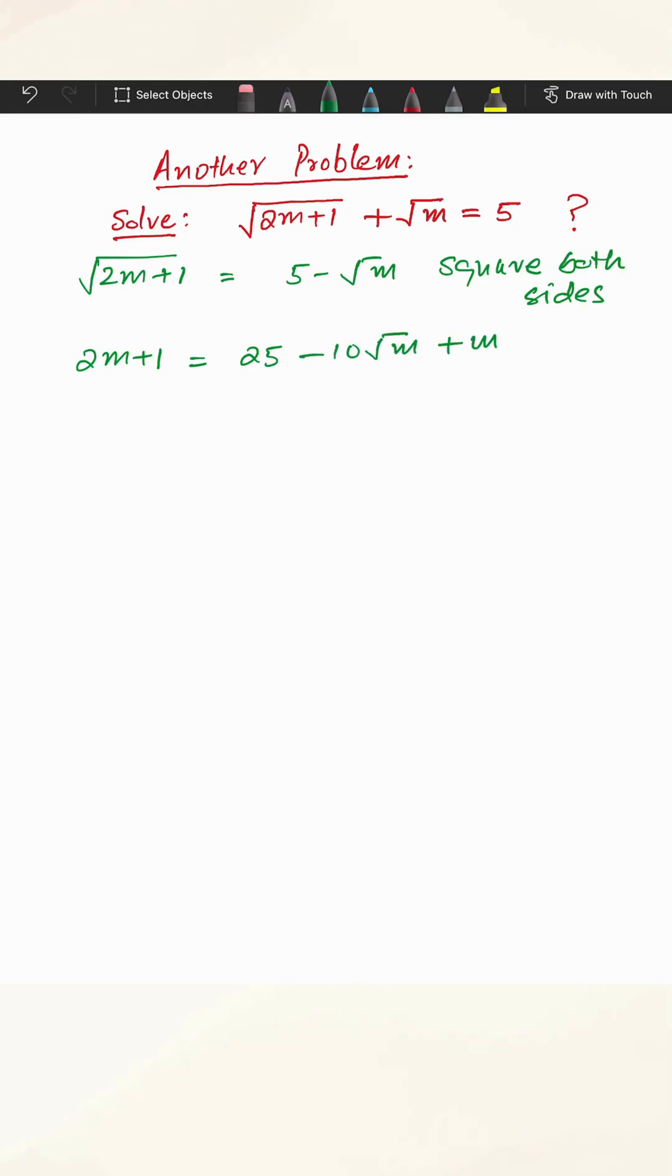Now I'm going to move the scary term on one side, everything else on the other side. So it's 10 root m on this side. The other side is 25 minus 1 plus m minus 2m.